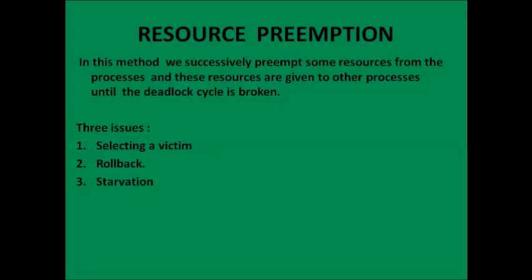The third issue to consider is starvation. In resource preemption, we preempt some resources from a process and give them to other processes. This method may cause some processes to starve. If resources are always preempted from the same process, it will cause starvation, so we need to guarantee that resources will not always be preempted from the same process.